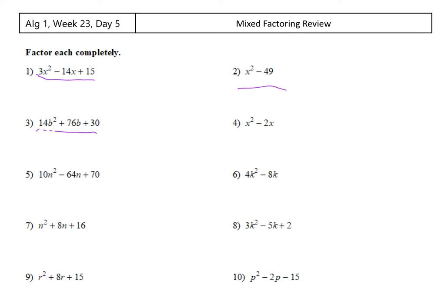So our very first step, because it's going to make it correct and because it's going to make the next part easier, is to divide all of this by two and rewrite this as two times 7b squared plus 38b plus 15.